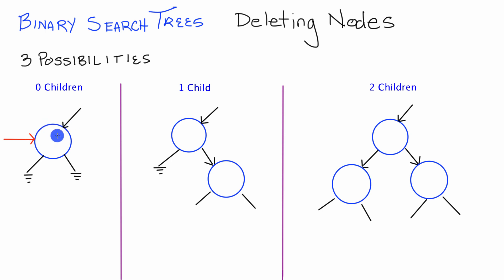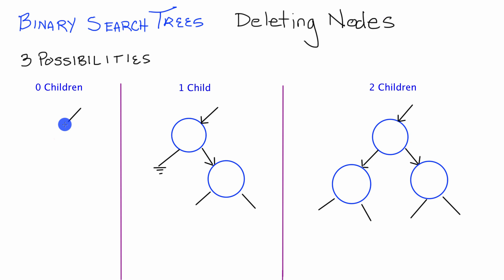What we're going to do in the case where we have no children is we're simply just going to delete this node. Then we just want to make sure that the pointer that was pointing to that node is now pointing to null. The case where we have zero children is pretty easy — we simply delete the node and make sure that pointer is now pointing to null.